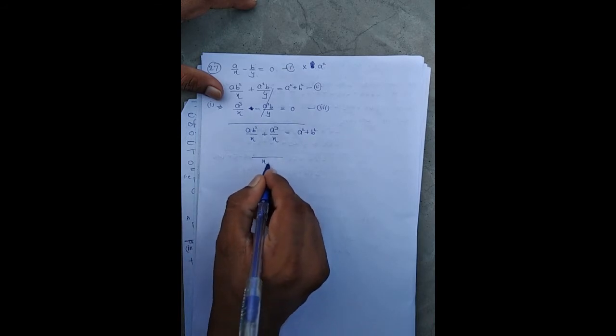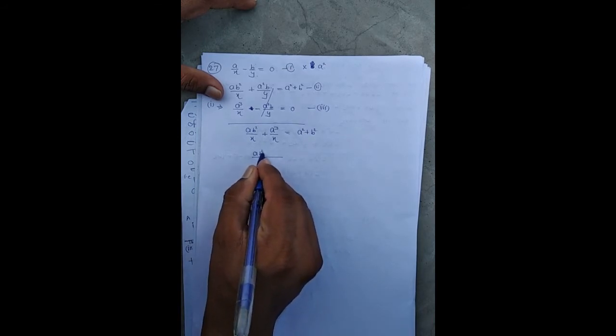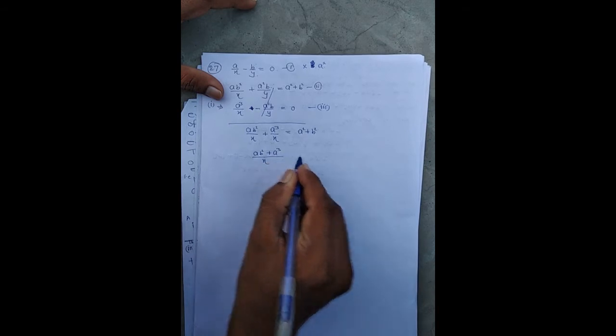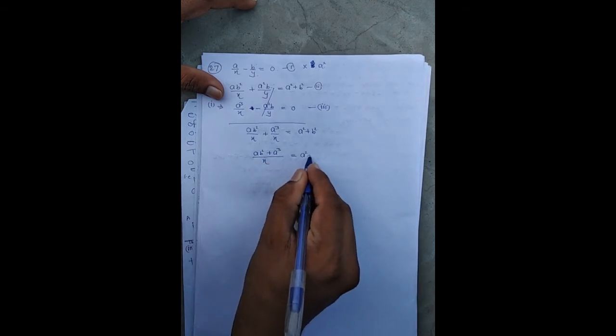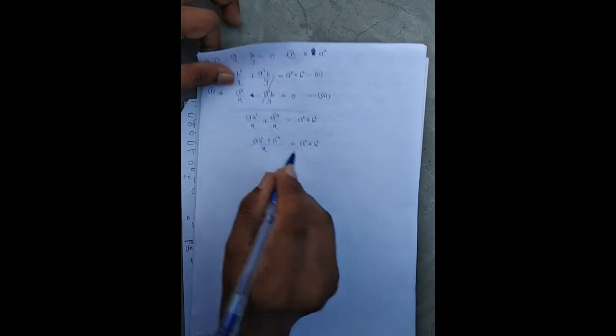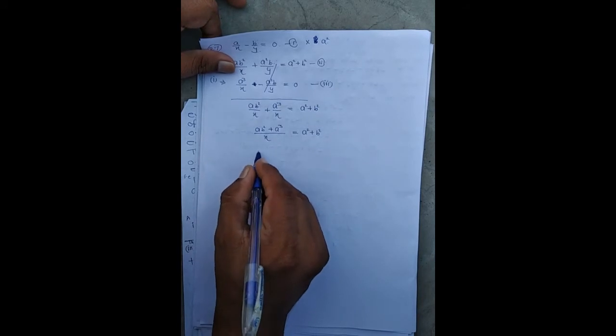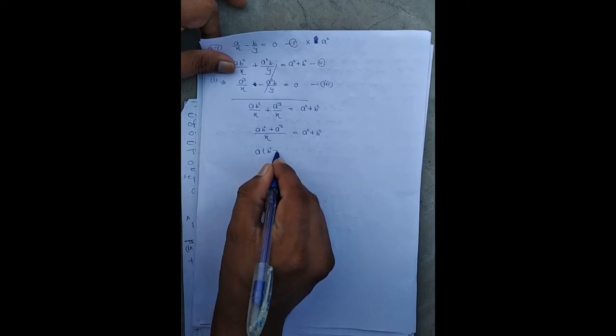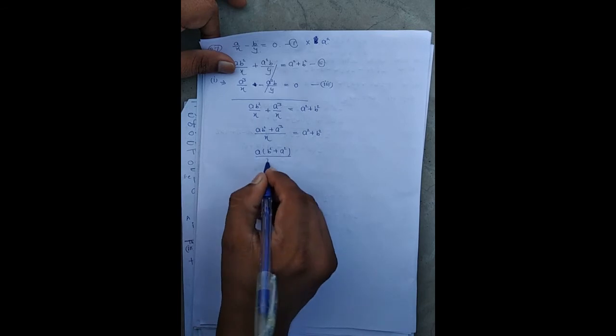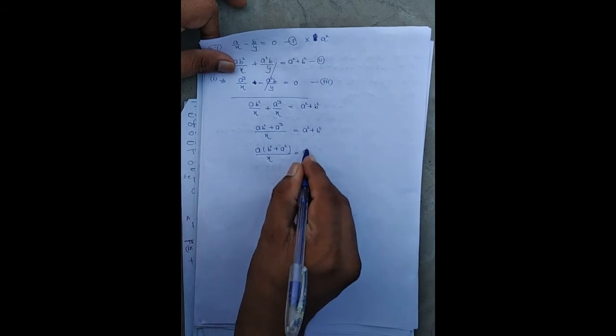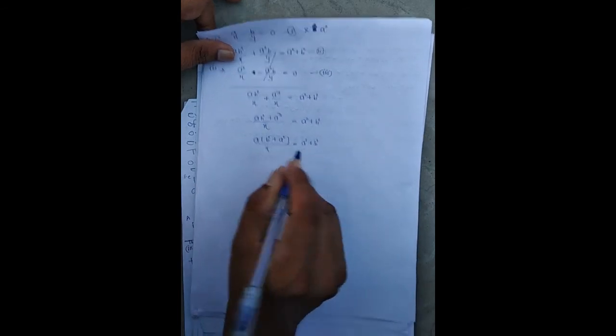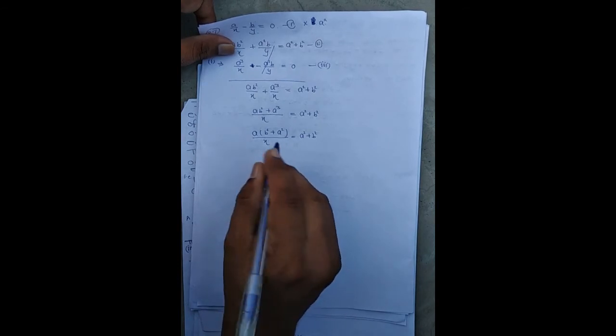This is equal to x(ab² + a³) = a² + b². Factor out a: a(b² + a²)/x = a² + b². Then the value of x is...